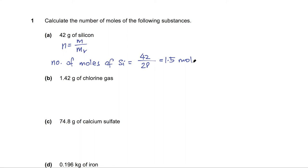Now let's look at chlorine. Chlorine gas is Cl2. So the number of moles is the mass, which is 1.42 grams divided by the MR 2 times 35.5, which is 0.02 mole.